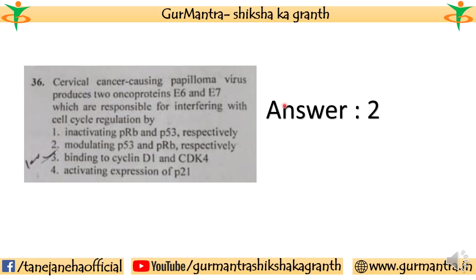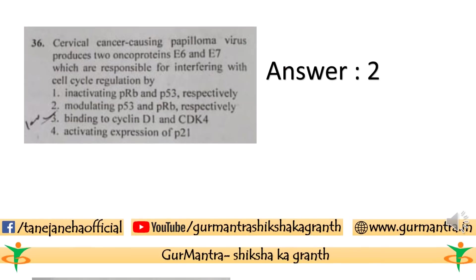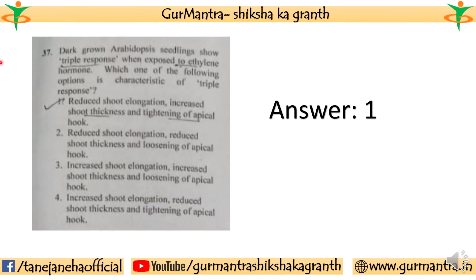The correct answer for question 36 is the second one. The next question, 37: Dark-grown Arabidopsis seedlings show triple response when exposed to ethylene hormone. Which one of the following options is characteristic of the triple response? The most appropriate answer is the first one: reduced shoot elongation, increased shoot thickness, and tightening of the apical hook.